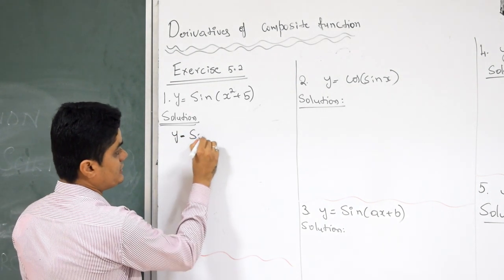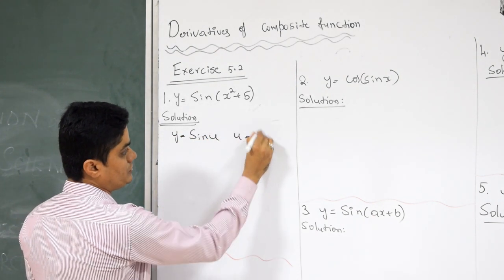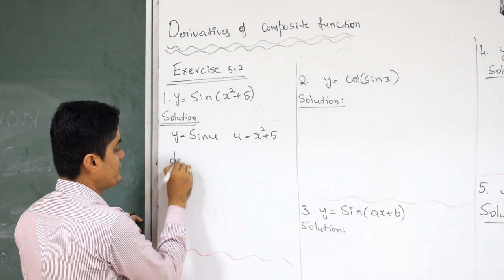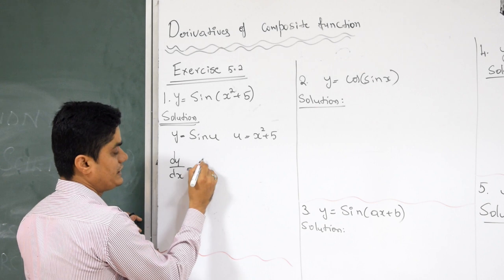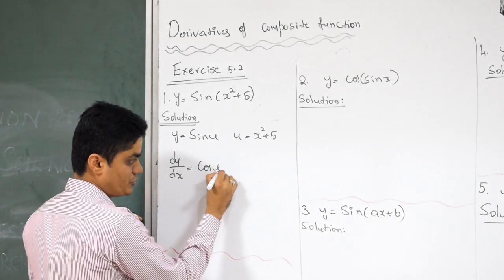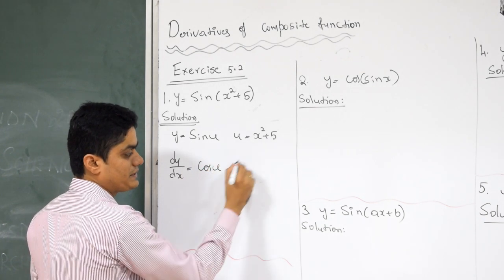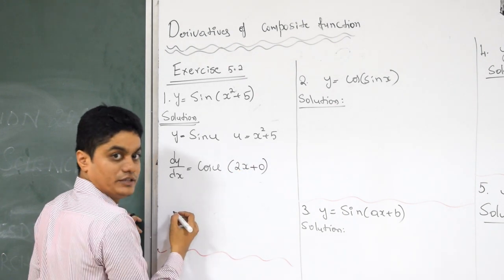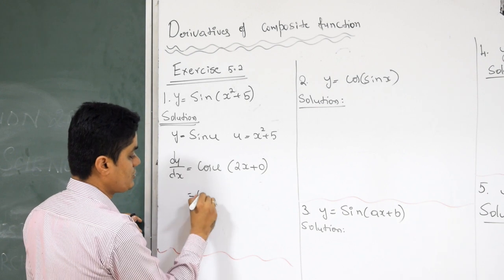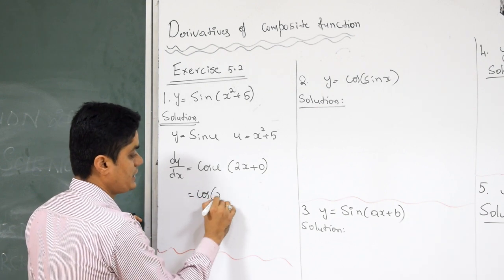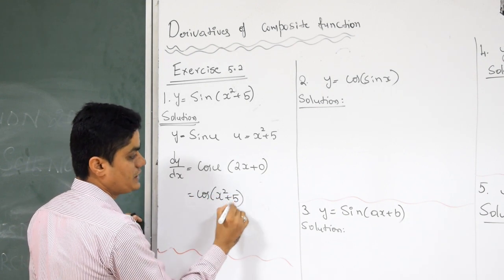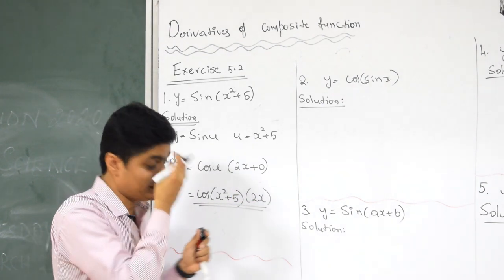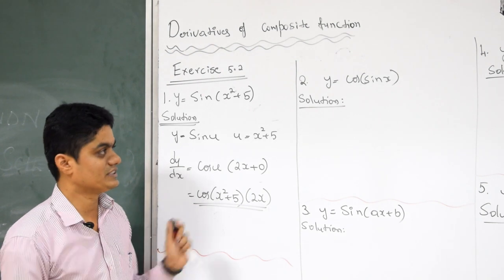What is the first method? Y is equal to sin U, U is equal to X squared plus 5. You already saw 6 examples, so you know this. So DY by DX is equal to: differentiation of sin U is cos U, differentiation of X squared plus 5 is 2X plus 0. So it is cos U — what is U? X squared plus 5 — into 2X. This is the basic method which you learned in the first 6 examples.